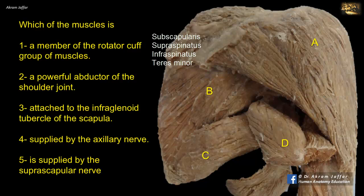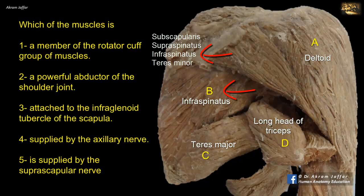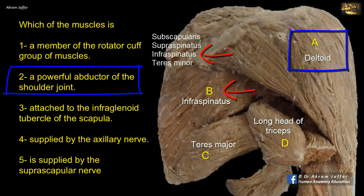The muscles shown here are: A is the deltoid, B is the infraspinatus, C is teres major, and D is the long head of triceps. So a member of the rotator cuff group of muscles is B, infraspinatus. A powerful abductor of the shoulder joint is A, that is the deltoid muscle, particularly the middle fibers of deltoid.